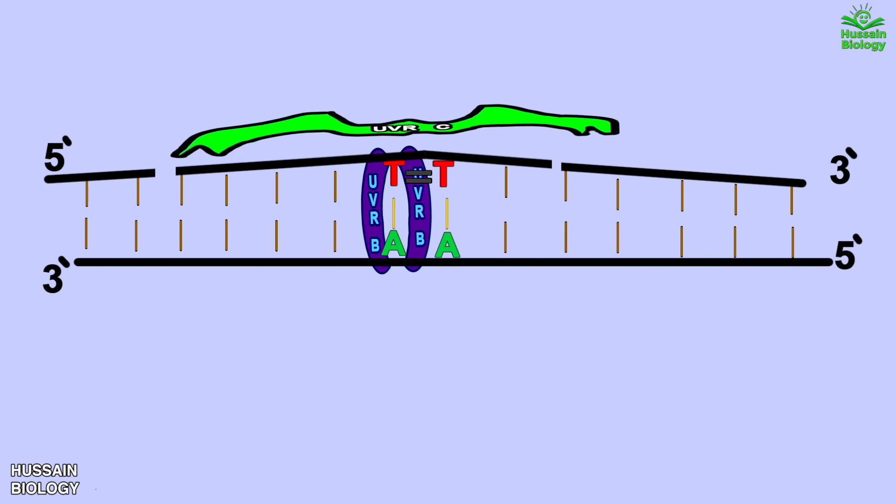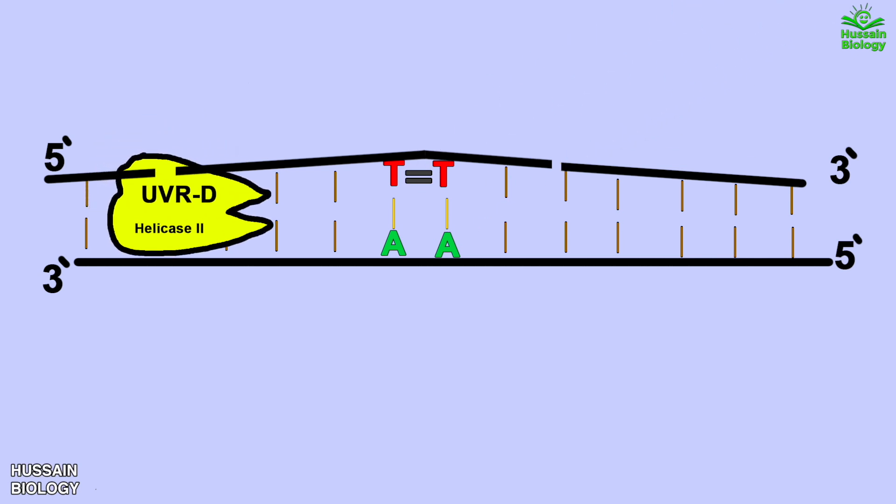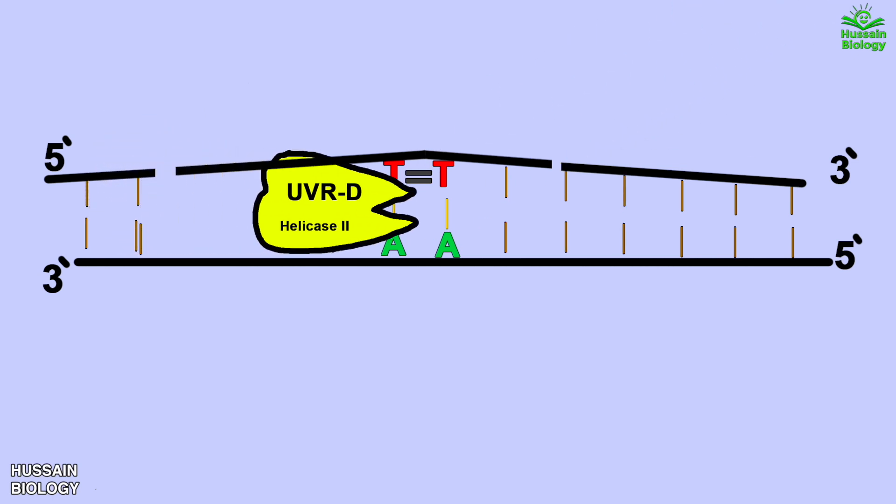At that time UVR C leaves, but the excised segment is still there because of the base pairing between the nucleotides. So to remove the base pairing we have the UVR D aka DNA helicase 2 which comes in and removes the base pairing and the excised segment is removed.